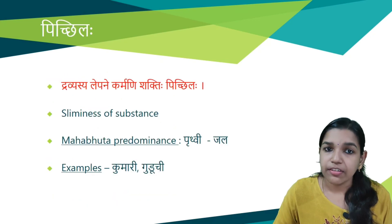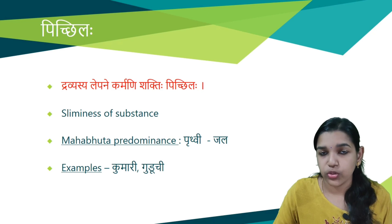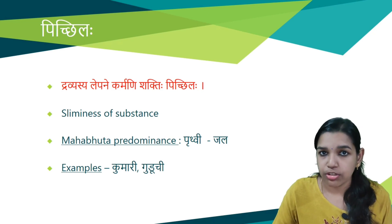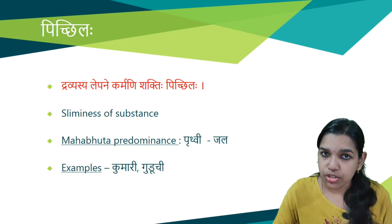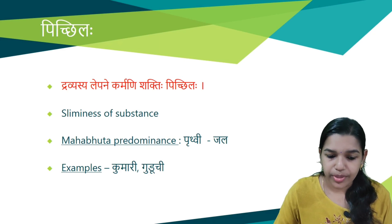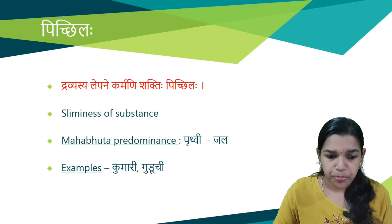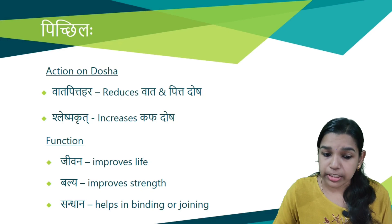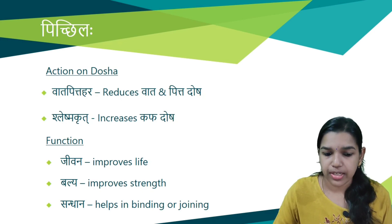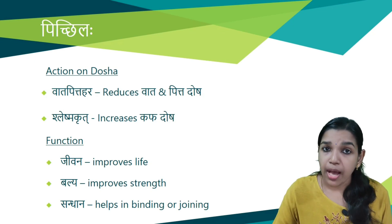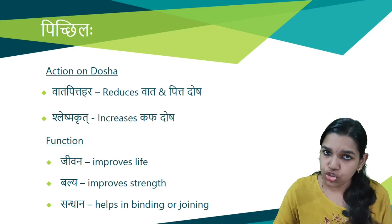Next is Pichila guna. Dravyasya lepane karmani shakti pichila. That is the sliminess or slimy nature of a dravya is considered Pichila. Prithvi and Jala are the predominant Mahabhudas. Examples are kumari and guduchi, etc. The actions carried out are vata pitta hara, reducing vata and pitta dosha, and Shleshma krit, increasing kapha dosha. Other functions are jivana, that is it improves life, balya which improves strength, and santhana which helps in binding or joining.